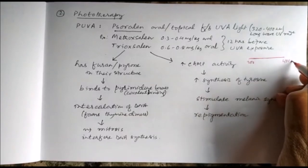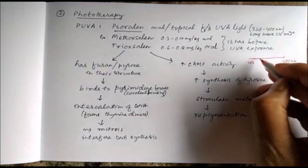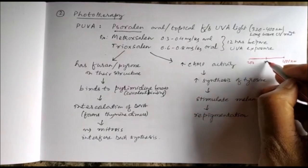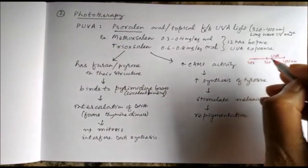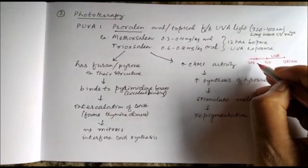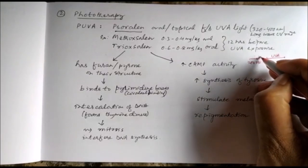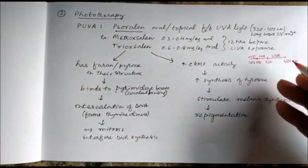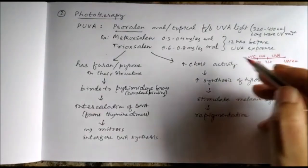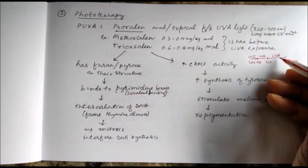Out of this, 320 to 400 nanometers is called UVA, 290 to 320 is called UVB, and the rest is UVC. For PUVA, this psoralen plus the long wavelength UV like UVA is considered here. The psoralens like methoxsalen and trioxsalen can be used both orally as well as topically.